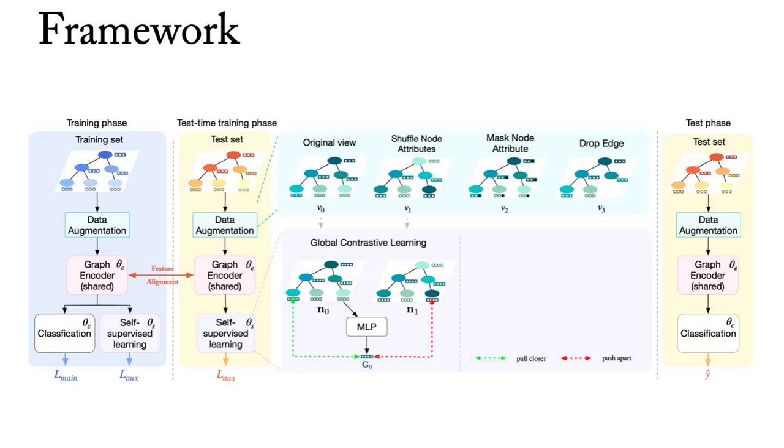In local contrastive learning, we differentiate between nodes in different augmented views of the graph to obtain invariant node representations.